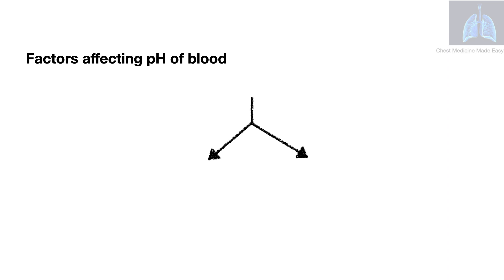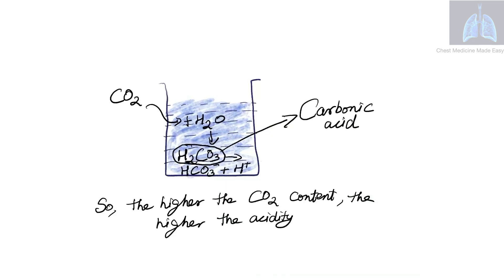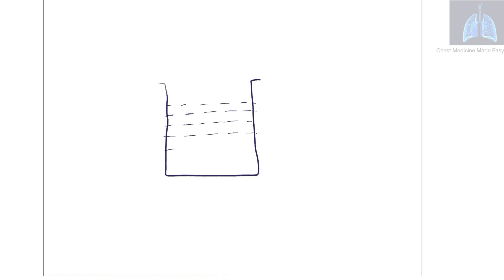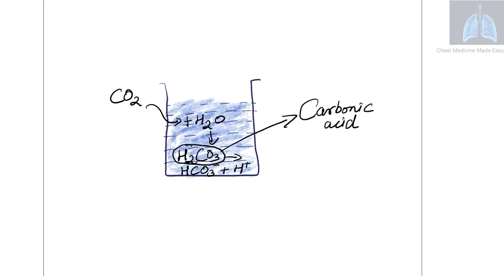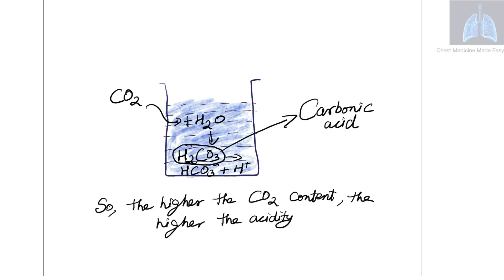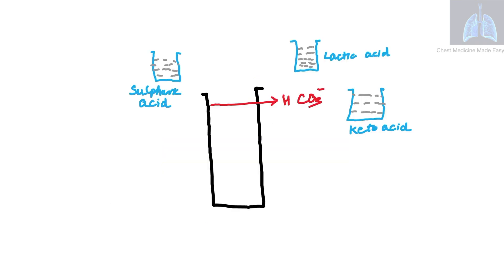Let's look at the factors affecting pH of blood. There is a respiratory factor and there is a metabolic factor. The respiratory factor is carbon dioxide and the metabolic factor is bicarbonate. As carbon dioxide dissolves in water, it forms H2CO3, which is carbonic acid. So the higher the CO2 content, the higher the acidity.